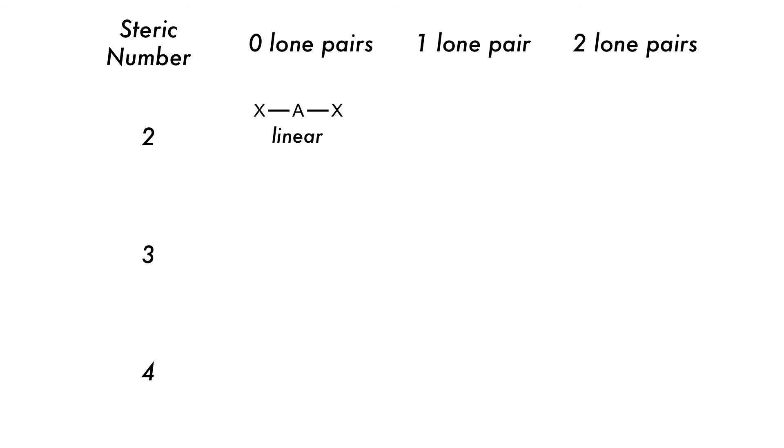For steric number 3, there are two geometries: trigonal planar with no lone pairs and bent with one lone pair.